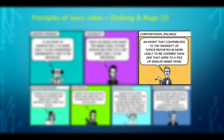Cosmopolitan Balance: an event that contributes to the diversity of topics reported is more likely to be covered than one that adds to a pile of similar news items. This may sound opposite to what we have just said. However, journalists as human beings like variety, not just routine and patterns, and therefore if they come across a story that has new meaning and provides something new to their audience, they will be happy to cover it.